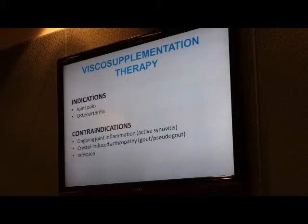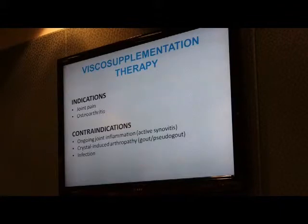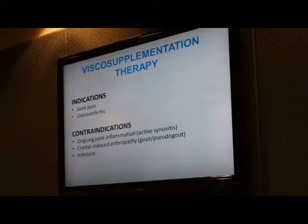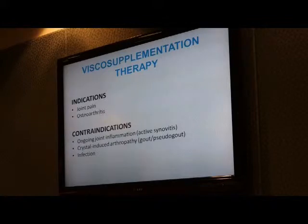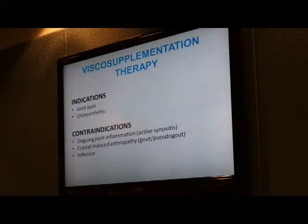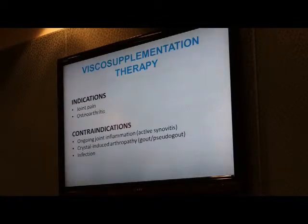Today we'll talk briefly about viscosupplementation therapy. This is an injectable therapy based on injections of hyaluronic acid. There are approximately five or six different brands available. With the exception of one brand, most products are derived from rooster combs. The only product that is 100% bioidentical is produced by Ferring, and the name is Euflexxa. Indications include joint pain and deformities due to osteoarthritis. Relative contraindications include joint inflammation from an underlying inflammatory condition, gout, calcium deposits in the joints, and joint infection.